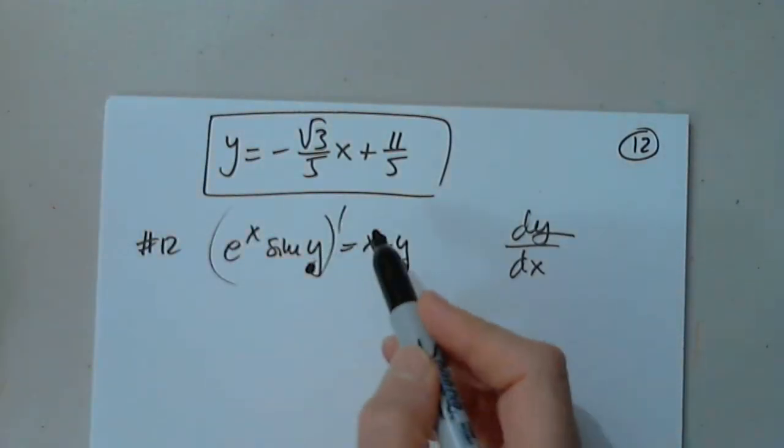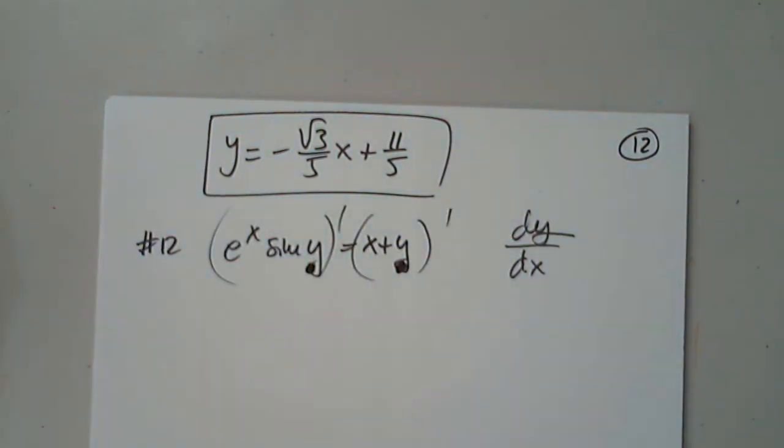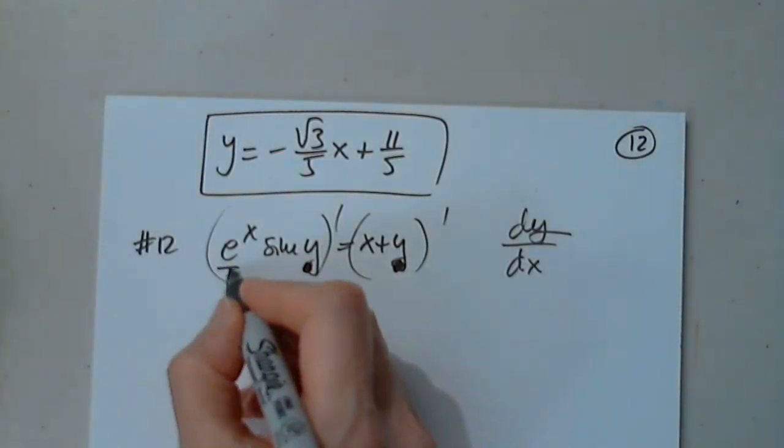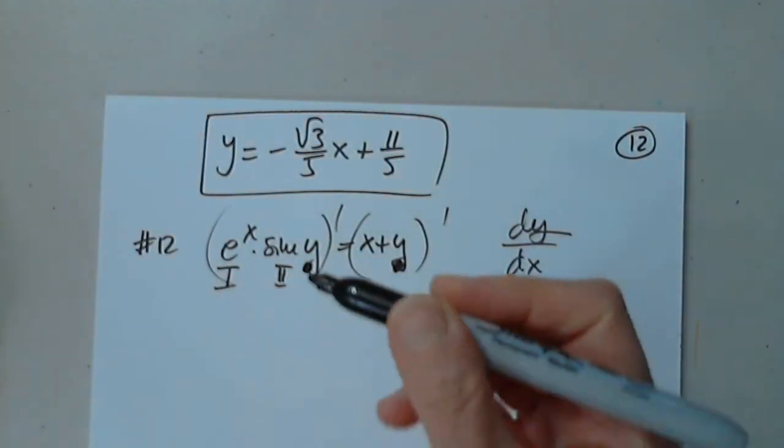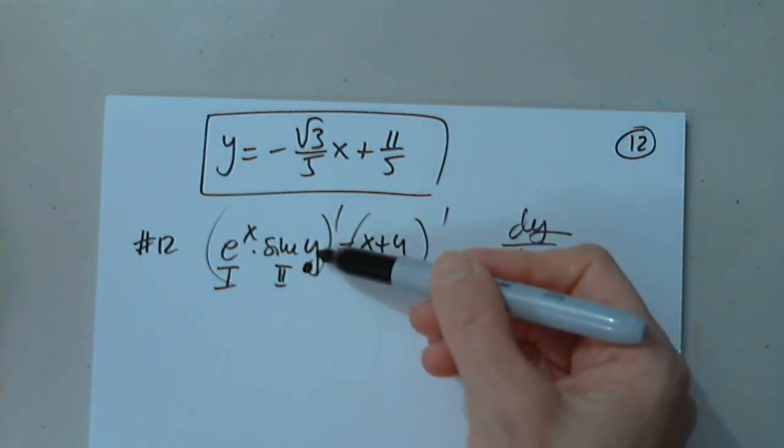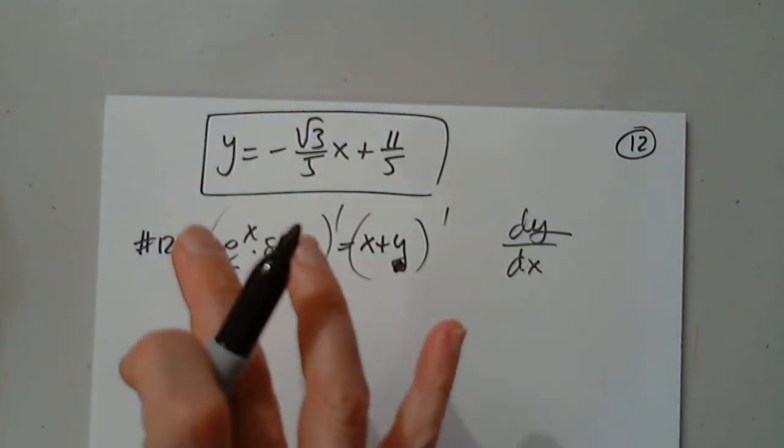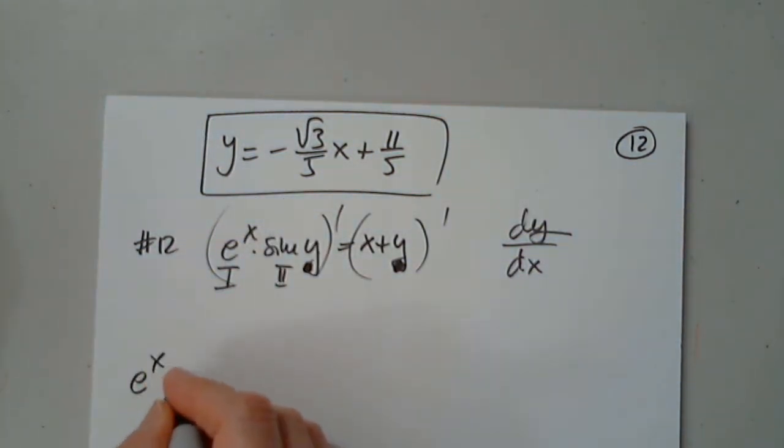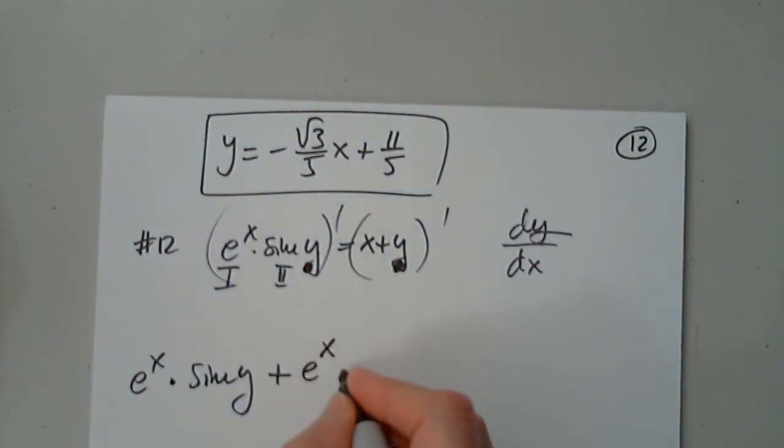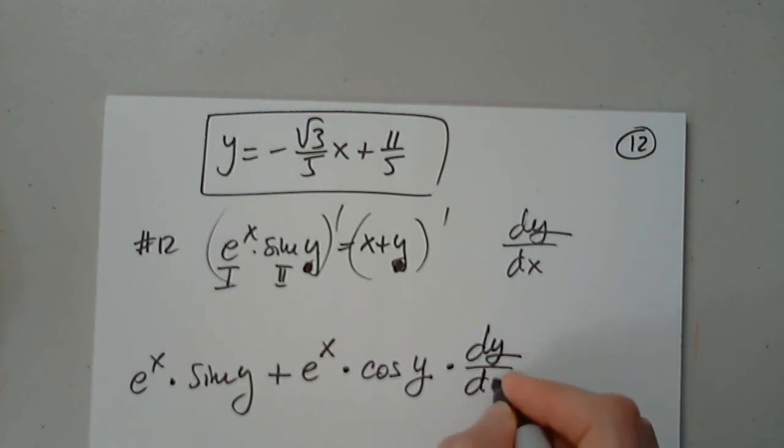So we are going to apply this operator to both sides. I have to be very careful because this is a product, but also this is a function of a function. So I use the product rule. The first function prime times the second one plus the first function. But now I have to be very careful. I differentiate the outer function first of the argument times the inner function prime, which is what I'm looking for.